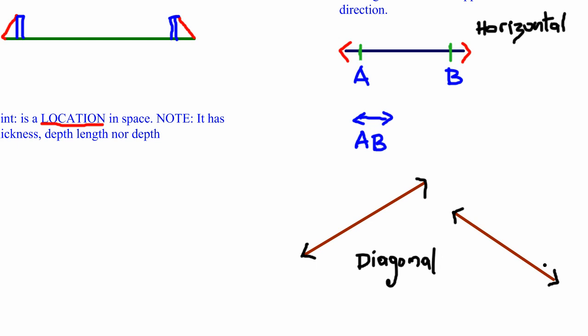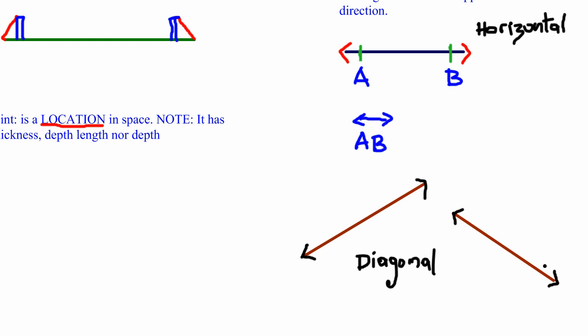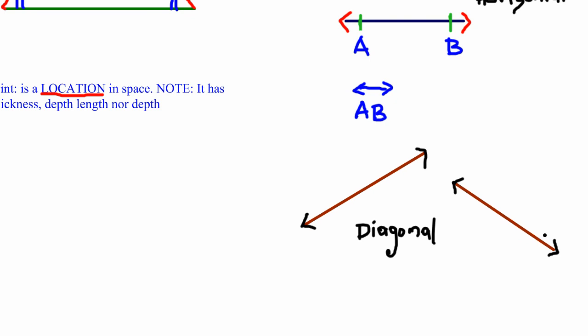The final type is a vertical line. A vertical line is a straight line running from top to bottom. With arrowheads on both ends to show it runs forever in both directions, this is called a vertical line.